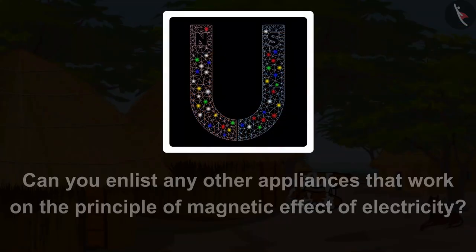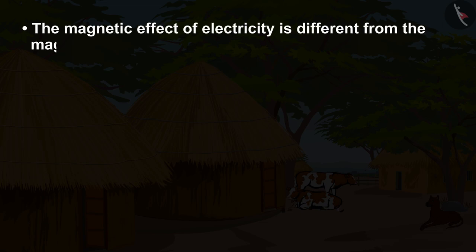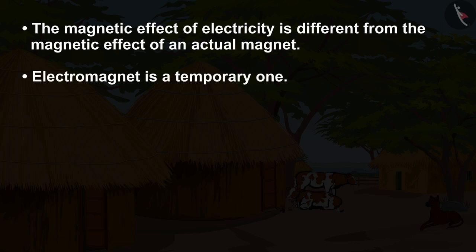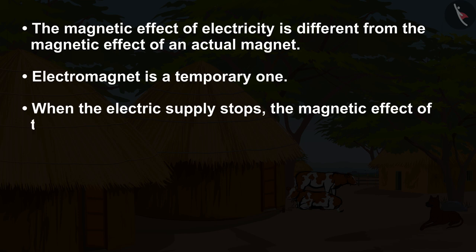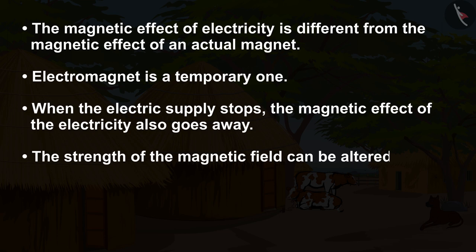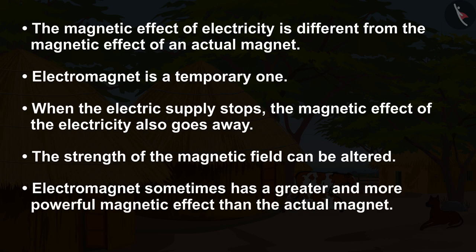Children, can you enlist any other appliances that work on the principle of magnetic effect of electricity? As you have seen, the magnetic effect of electricity is different from the magnetic effect of an actual magnet. An electromagnet is a temporary one — when the electric supply stops, the magnetic effect also goes away. The strength of the magnetic field can be altered. Electromagnets sometimes have a greater and more powerful magnetic effect than an actual magnet.